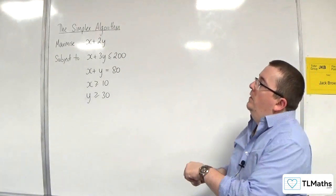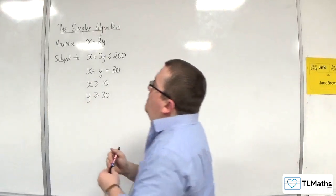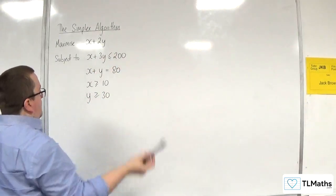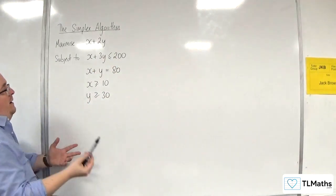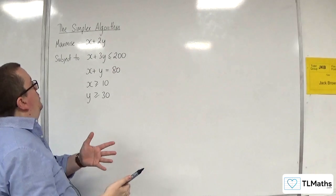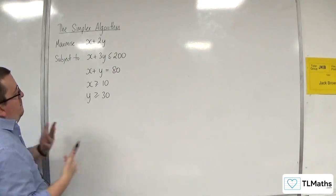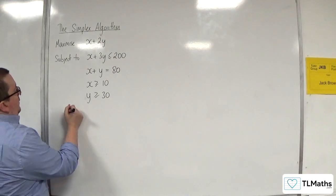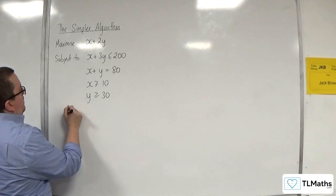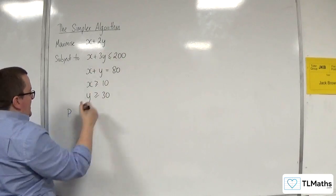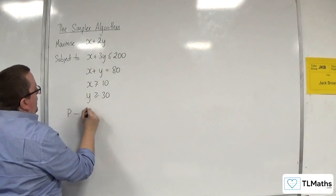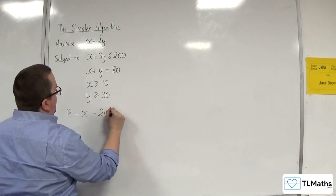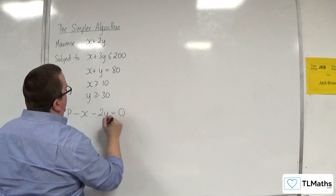We're maximising x plus 2y, so we're going to put that as p equals x plus 2y, and then move everything to the left-hand side — take away x from both sides, take away 2y from both sides — equals 0.